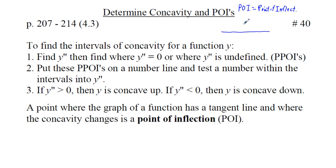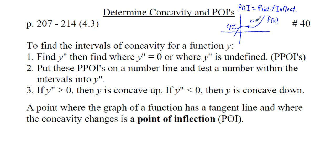A point of inflection is a point on the graph of a function. I'm going to draw a function here — we'll call this f of x. The point of inflection happens where, as the graph comes from the left, the graph is curved downward, and then transitions to curving upward. The in-between place where the graph changes from concave down to concave up is what's referred to as a point of inflection.